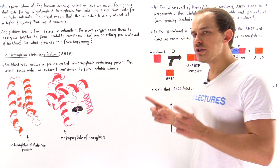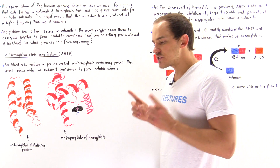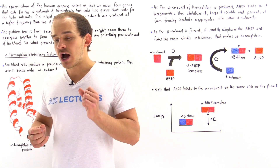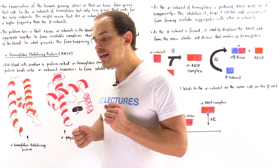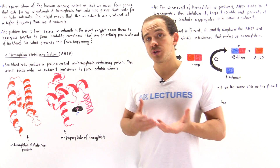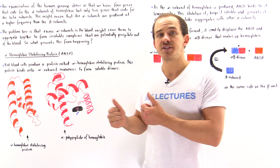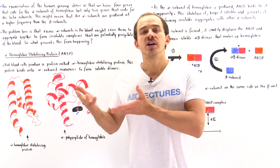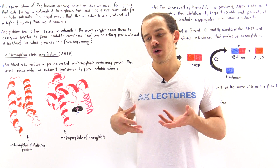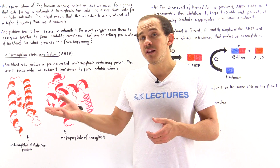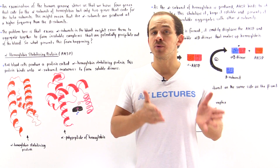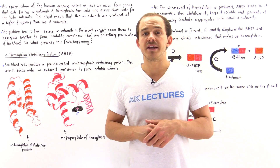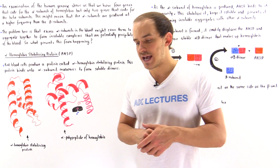If all these genes are expressed at the same exact rate, we're going to produce twice as many alpha subunits as beta subunits because we have twice as many alpha genes. So if we produce one million alpha units, we're going to produce only 500,000 beta subunits — twice as few.